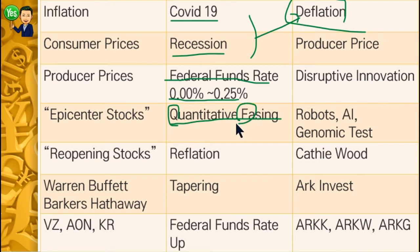The FED did two main things: lowered the FED rate and did QE. They supported more cash to the market, so the amount of cash was growing. After that, we started doing vaccines, wearing masks, and social distancing, and the economy recovered little by little. More cash came into the market — that we call reflation.